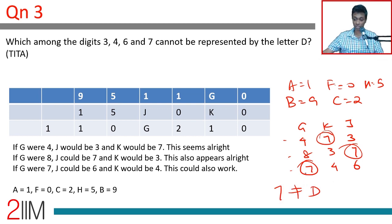D could be 3. In which case G, K, J could be this. D could be 4. In which case G, K, J could be this. D could be 6. In which case G, K, J could be this or this. But D cannot be 7. One of G, K or J has to be 7. Or the answer is 7.